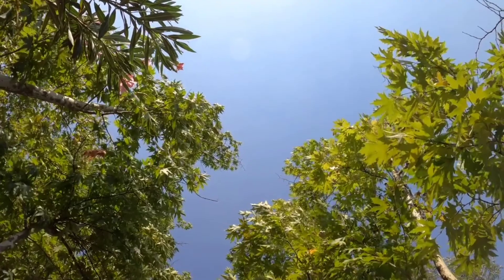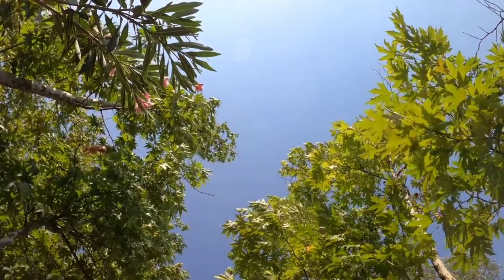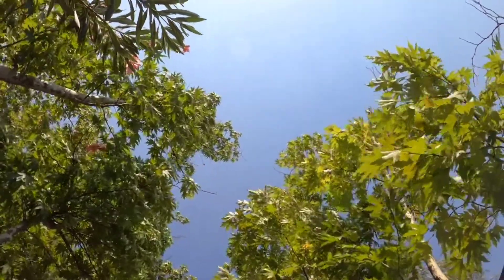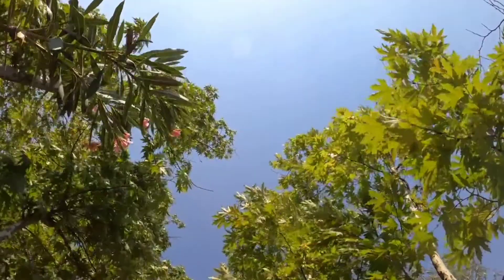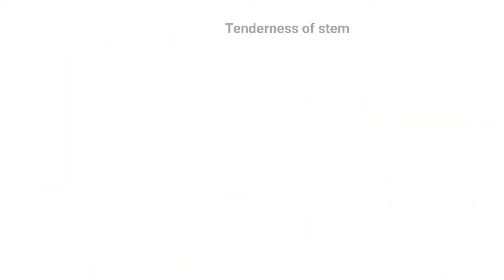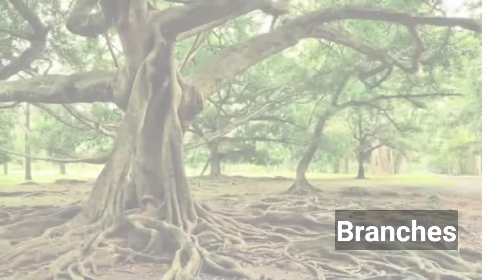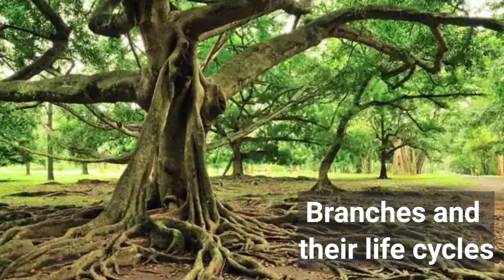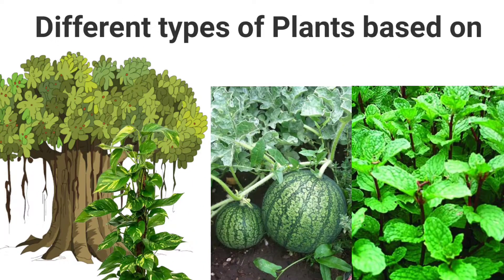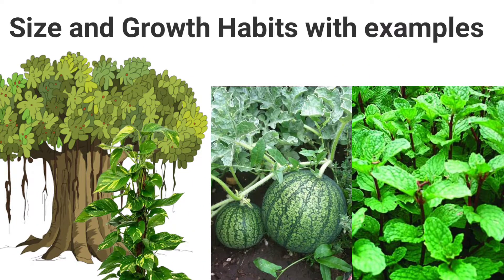The classification of plants is mainly based on several factors, and they can be further classified based on their height, tenderness of stem, branches, and their life cycle. In this video, let us know in detail about the different types of plants based on size and growth habits with examples.